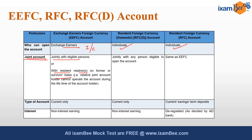Former or survivor basis means the relative joint account holder cannot operate the account during the lifetime of the primary account holder. The RFC(D) account can be held jointly with any person eligible to open the account, and the RFC account can be held jointly in the same manner as the EEFC account. The EEFC account can be only a current account, and similarly RFC(D) can also be only a current account.